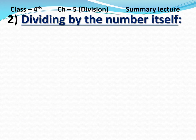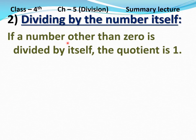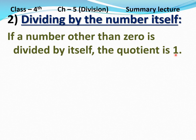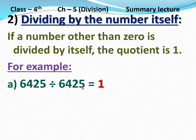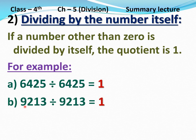Property number 2: Dividing by the number itself. If a number other than 0 is divided by itself, the quotient is 1. For example, part A: 6425 divided by 6425 — here we are dividing 6425 by the same number, 6425, so the quotient is 1. Part B: 9213 divided by 9213 equals 1.